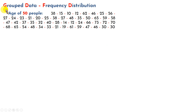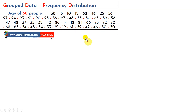We're going to talk about grouped data and how to create a frequency distribution table. Here we have the ages of 50 people, and with this information we are going to create a frequency distribution table.